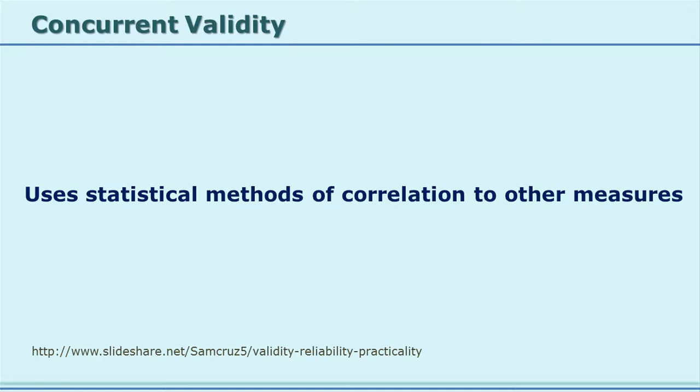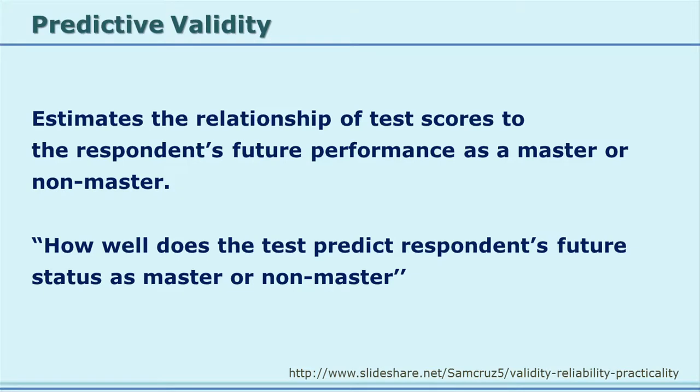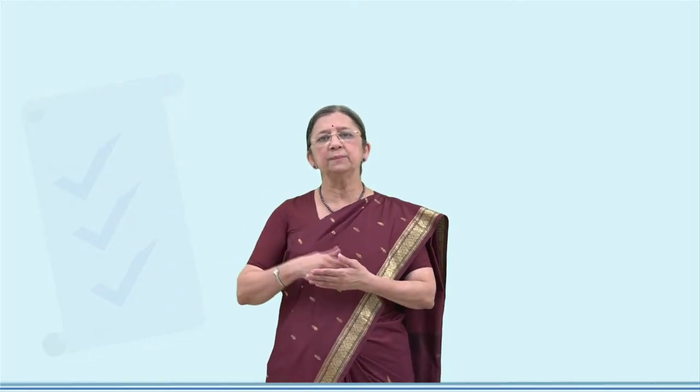Concurrent validity is another type generally established using statistical methods, especially correlation, to other measures like criterion validity. Predictive validity means you are predicting future achievement — estimating the relationship of test scores to the respondents' future performance. For example, if you prepare a tool on attitude towards certain things, this attitude will be the base for some behaviour seen in the future, such as whether a person will be a good manager with reference to decision making.